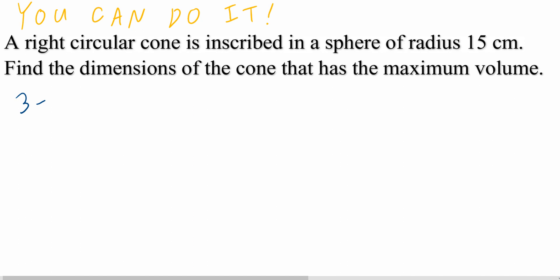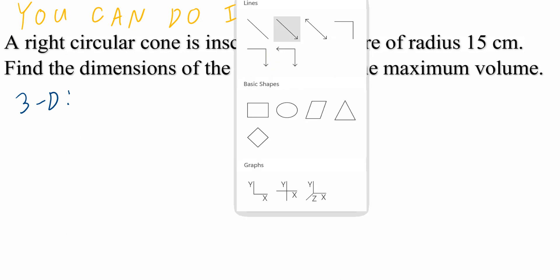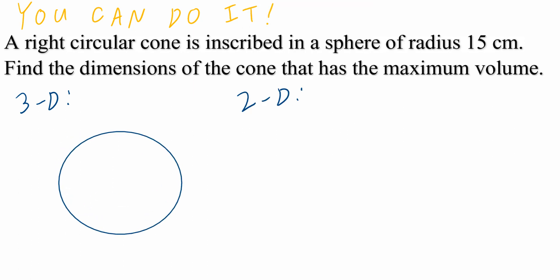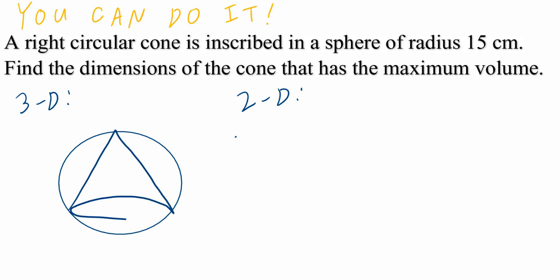Step number one: draw a diagram. I'm going to start with a three-dimensional diagram, then draw this in two-dimensional space, then write down the equation of constraints. When I think about a three-dimensional diagram, I'm thinking about the sphere, and inside the sphere there is the cone. We know that the radius of the sphere is going to be 15 centimeters — so this measurement is going to be 15 centimeters.